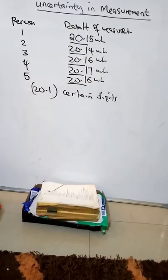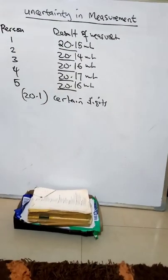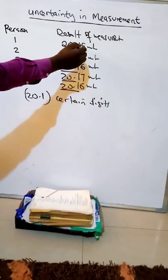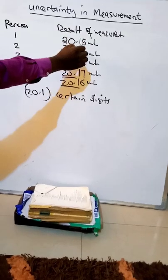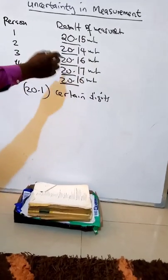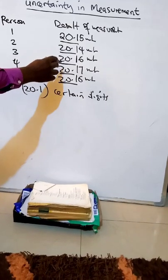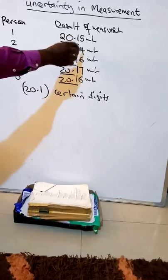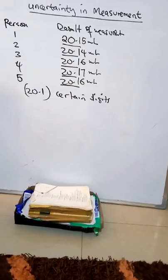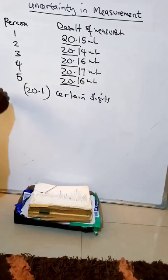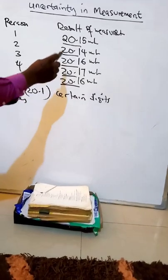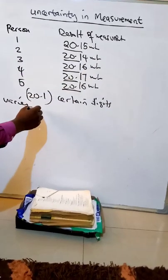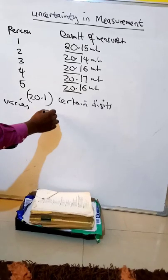The number to the right of the 1 must be estimated. This digit varies since it is estimated, so if a different person makes the reading, you'll find that it varies. Since the last number is estimated, these are called uncertainty digits.